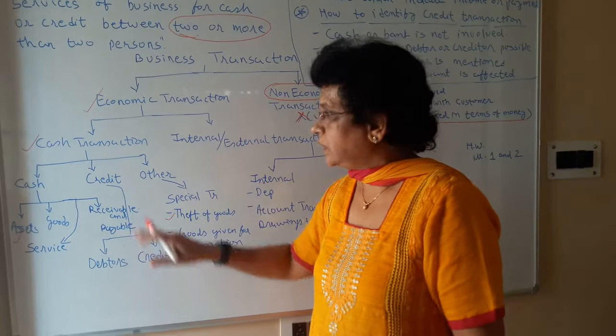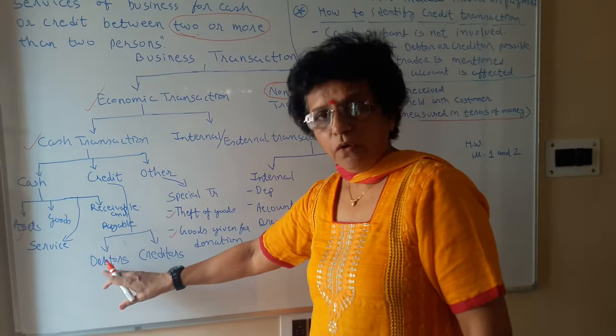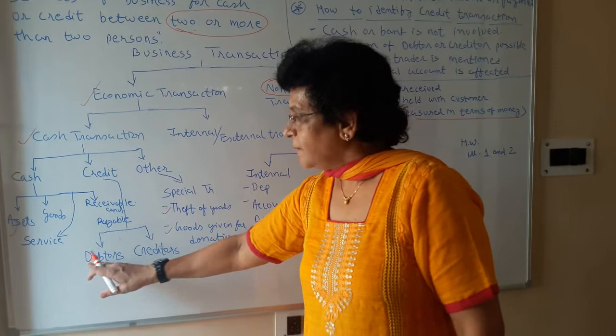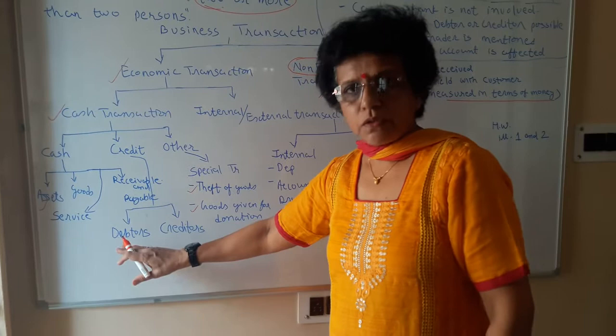In a credit transaction, the two folds are: for example, goods sold to RAM. One fold becomes RAM — RAM is the receiver — and the second fold becomes sales. In this manner, there is no cash involvement, but still the two folds are there, so you have to record the transaction. Similarly for a creditor.